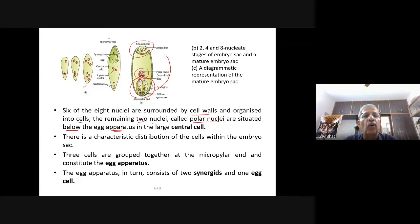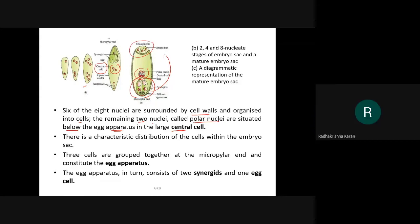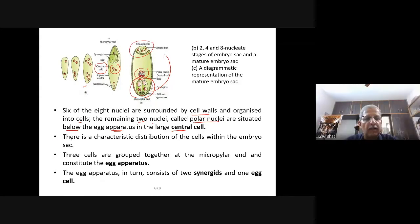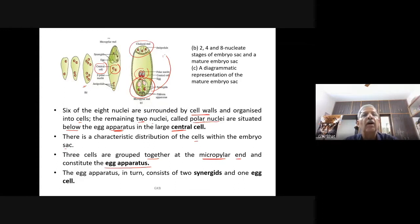Polar nuclei are situated below the egg apparatus in the larger central cell. Three cells are grouped together at the micropylar end and constitute the egg apparatus. The egg apparatus in turn consists of two synergies and one egg cell — that is a very important concept, seven cells and eight nuclei.